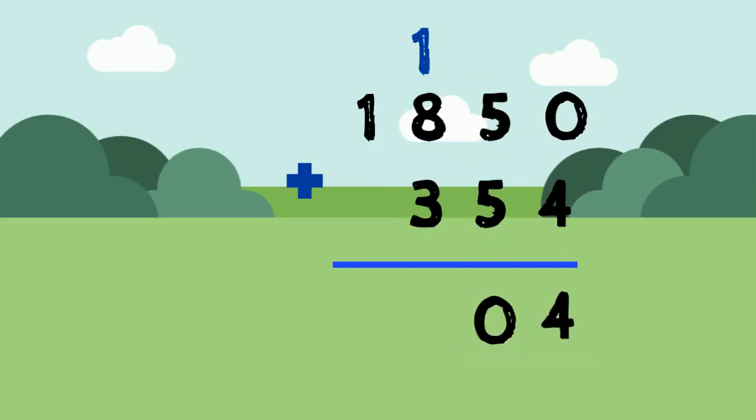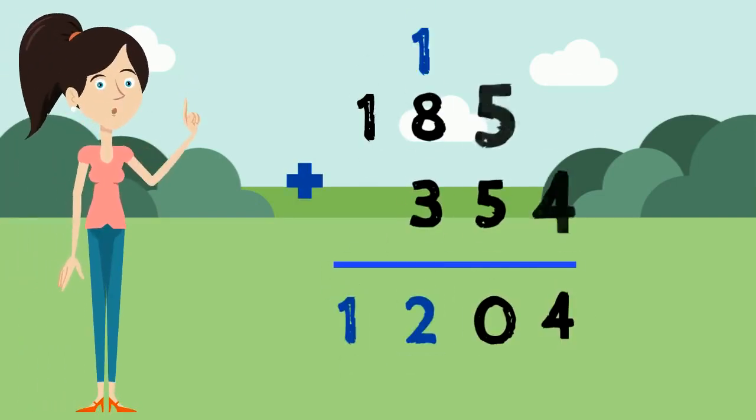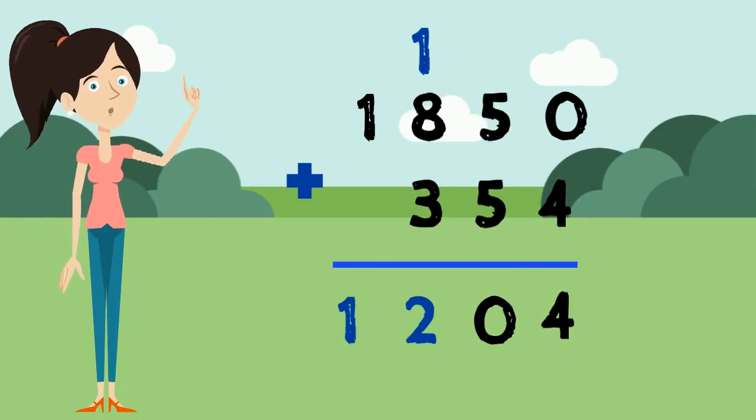Okay, now that we have carried that 1, we can add the other digits in the hundred's column, which means adding up 3 digits now. 1 plus 8 plus 3, which equals 12. Hmm, another two-digit number. Okay, it looks like we have to carry again.